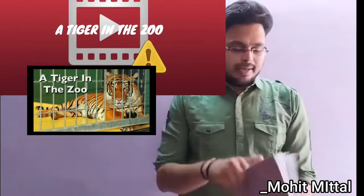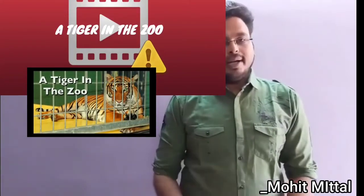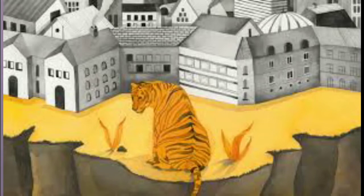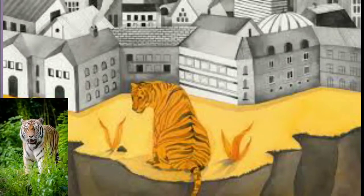Welcome friends. Mohit Mittal is back with a new video for Grade 10th English Language and Literature. Today I will discuss a poem — 'A Tiger in the Zoo' for Grade 10th. This poem is all based on wild animals. The poet Leslie Norris talks about keeping wild animals away from homes or zoos and keeping them in their natural habitat, that is the jungles or the forest.